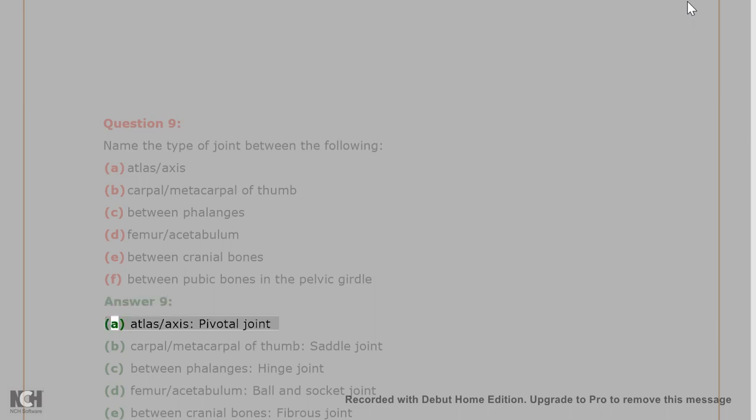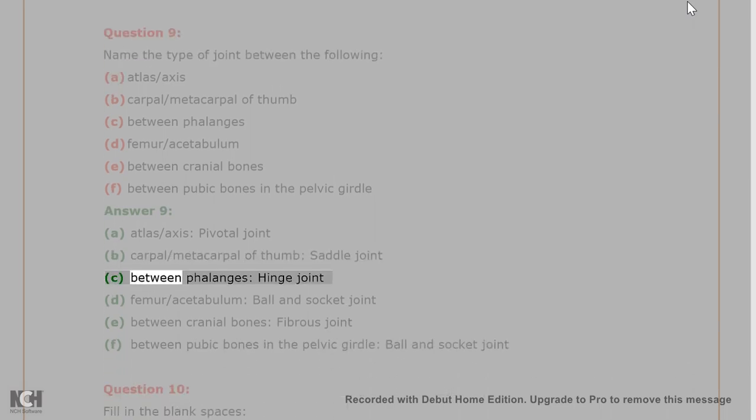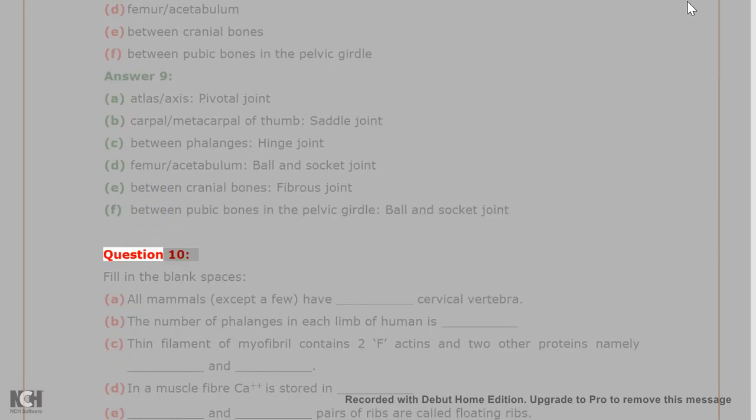Answer 9. A. Atlas/axis - Pivotal joint. B. Carpal/metacarpal of thumb - Saddle joint. C. Between phalanges - Hinge joint. D. Femur/acetabulum - Ball and socket joint. E. Between cranial bones - Fibrous joint. F. Between pubic bones in the pelvic girdle - Ball and socket joint.